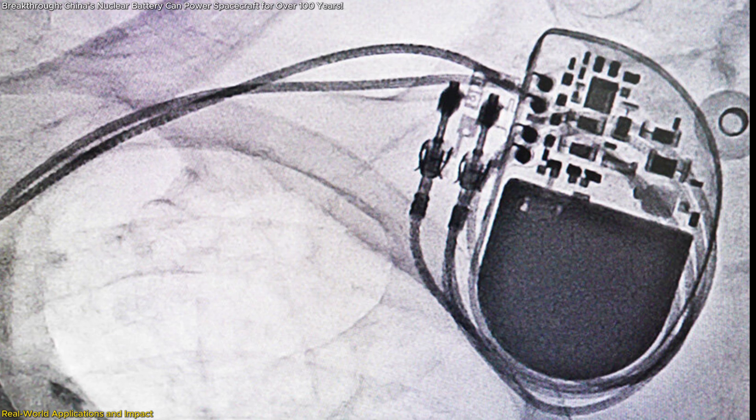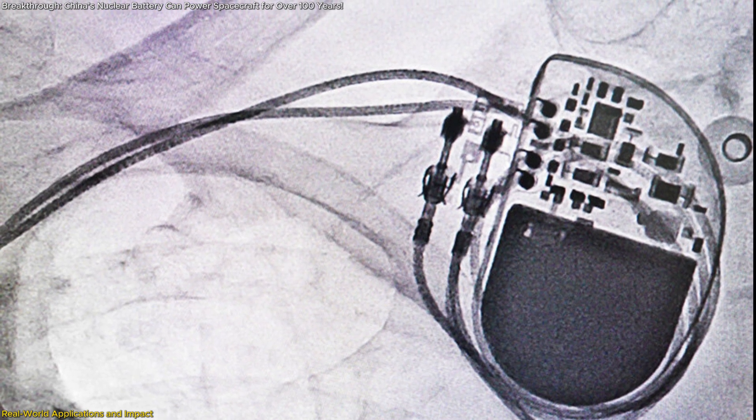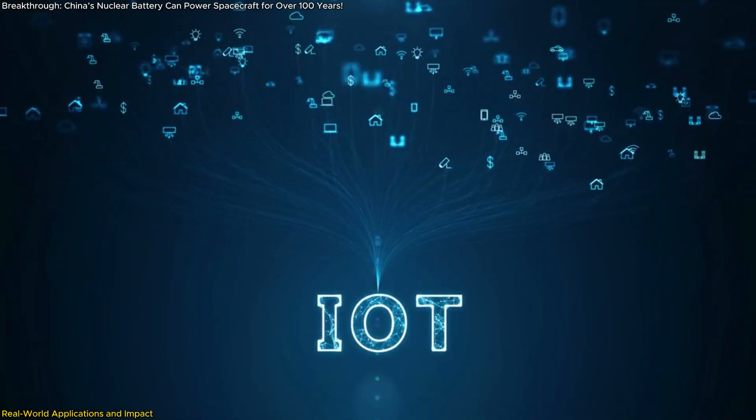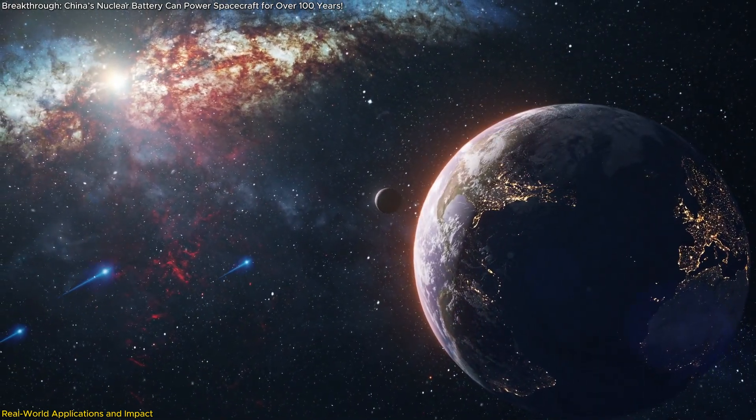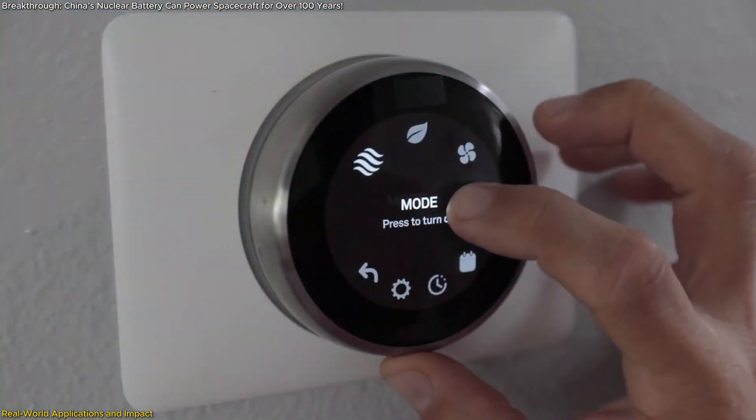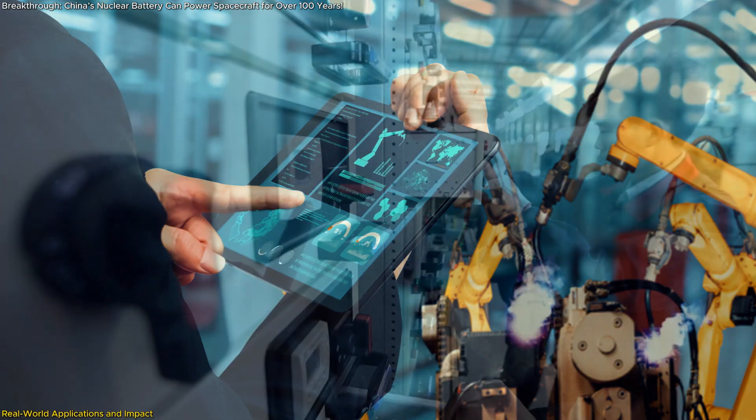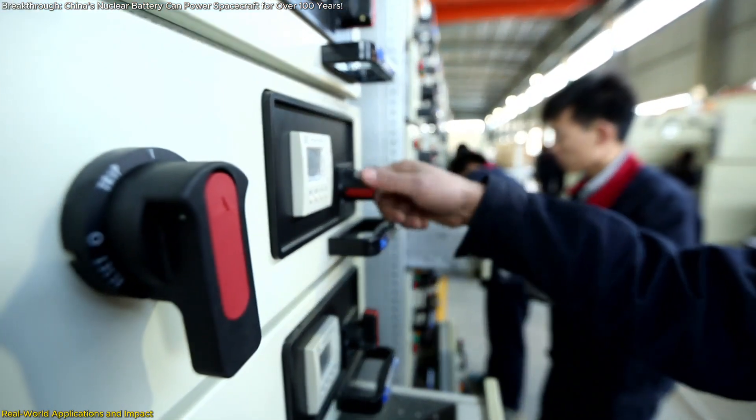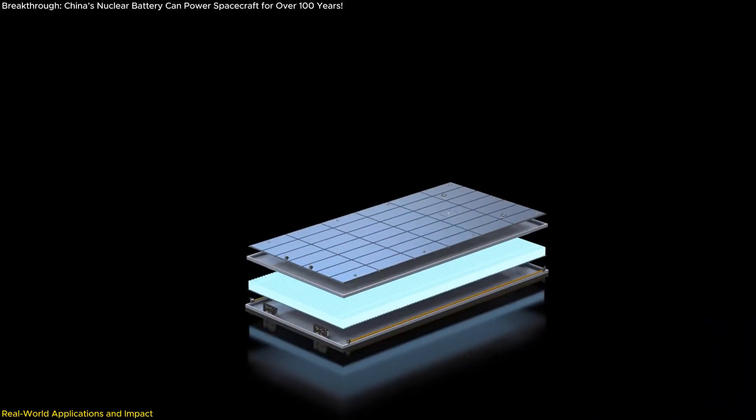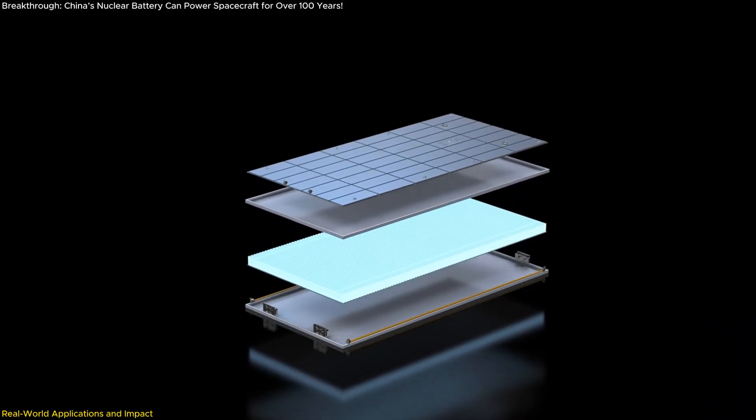The IoT industry is expanding rapidly, with trillions of devices needing constant power. From smart home sensors to industrial monitoring systems, battery replacements and charging logistics remain a major challenge. Zhulong-1 could enable self-powered IoT devices, drastically reducing the need for maintenance and extending operational lifespans.